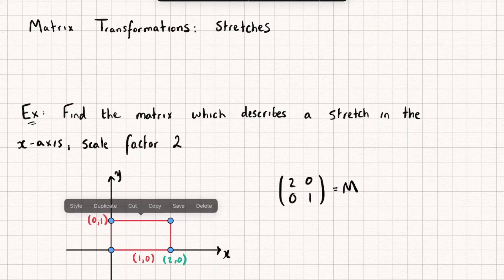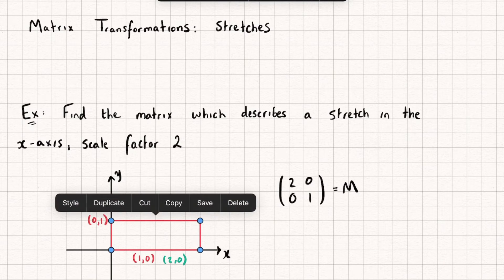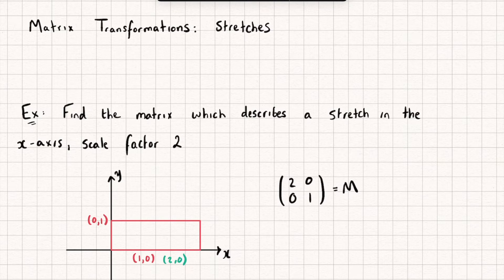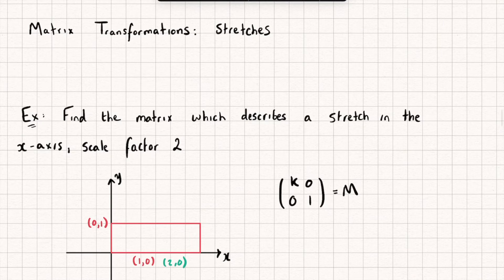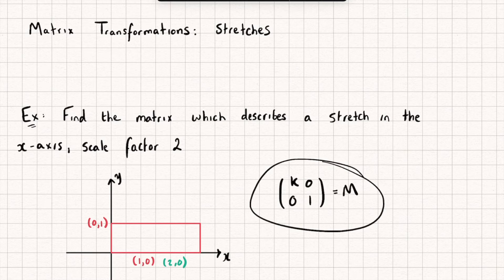Now if we wanted to stretch scale factor 3 in the x axis, then this just 2 in this matrix would change to a 3. And so what we could say is if we wanted to perform a stretch scale factor k parallel to the x axis, well it could be done by using the following matrix here, where k represents the scale factor. And you can see we're stretching in the x axis, but the y axis, or my point 0, 1, remains fixed. It remains unchanged.